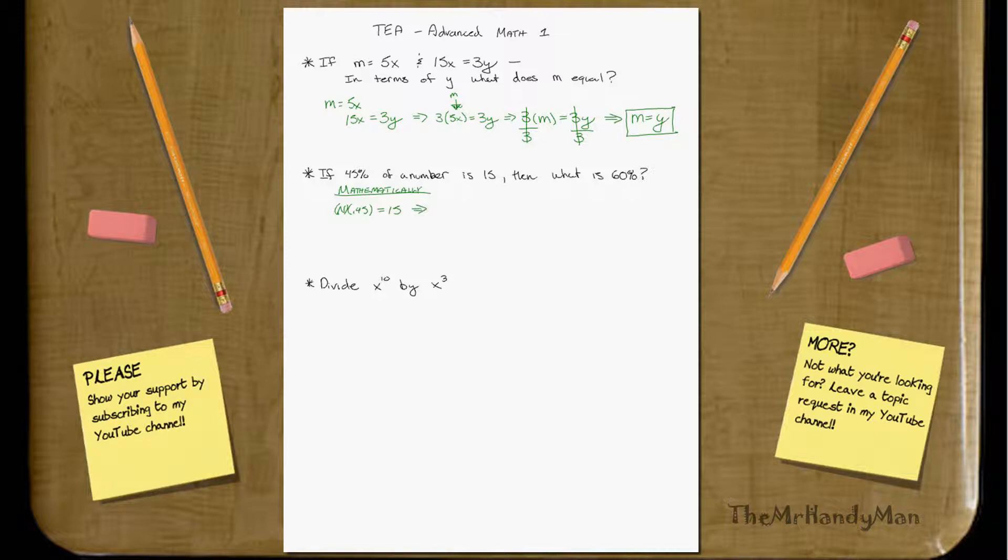What you need to do for a mathematical approach is you need to solve for the number, so then you can backtrack it later. So what you do is you solve for this number, and you'll find what n equals. Then once you have that solution, then you go n, whatever that number may be, times 0.6, and that will equal your final solution, which will be 20.